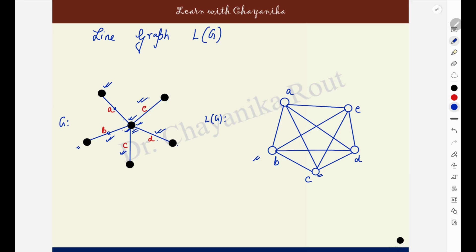Now come to edge E. E is sharing the other end point with all the other edges A, B, C and D. E has to be made adjacent to A, B, C and D — that is already done here, so I am not going to draw multiple edges. This is the line graph of the given graph G.